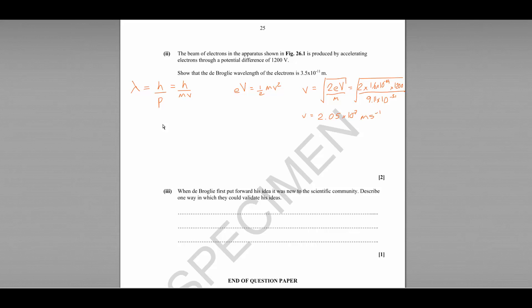Finally, we can plug this into our wavelength equation. The Planck constant 6.63 times 10 to the power of minus 34 divided by the mass of an electron again, this time 9.11 times 10 to the minus 31, multiplied by the velocity 2.05 times 10 to the minus 11 meters. Now this is a show that question, so it's very important that you show all of the stages of your working. There are no marks for the final answer.